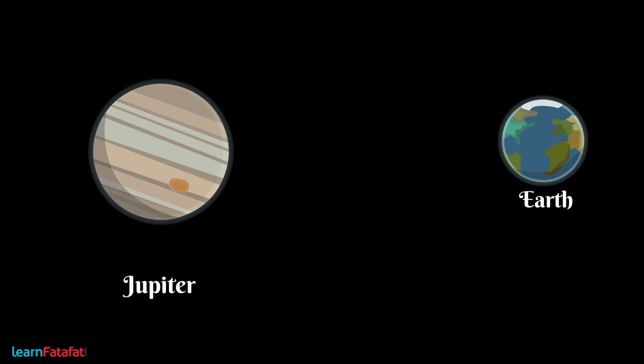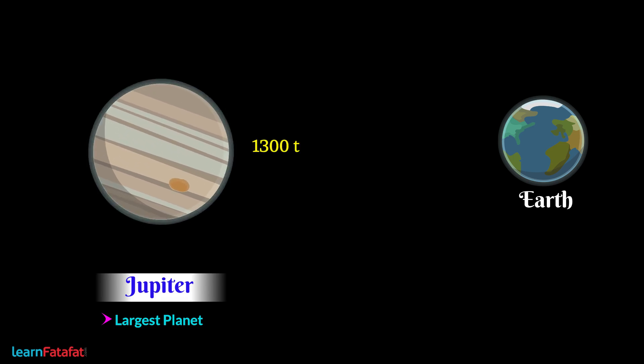Jupiter. The largest planet of the solar system is Jupiter. Jupiter is about 1300 times larger than Earth. However, the mass of Jupiter is 318 times that of our Earth.